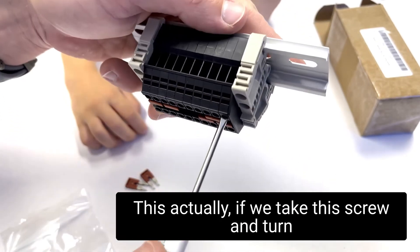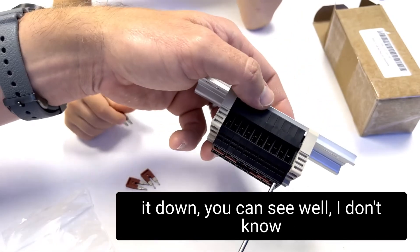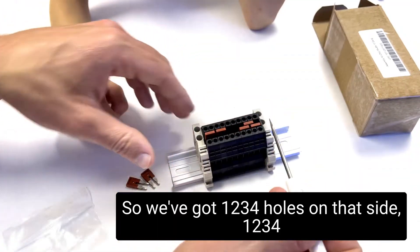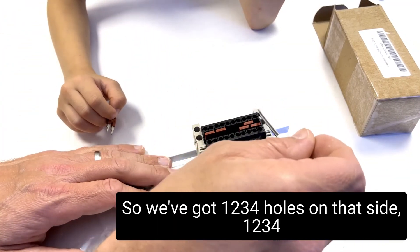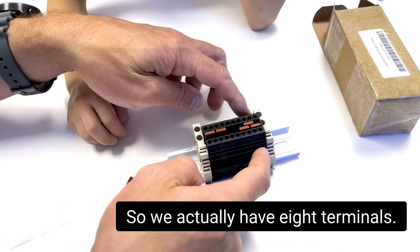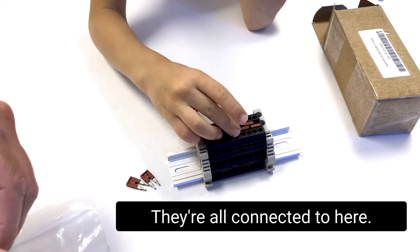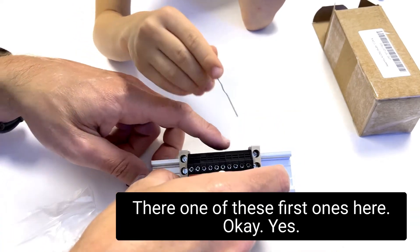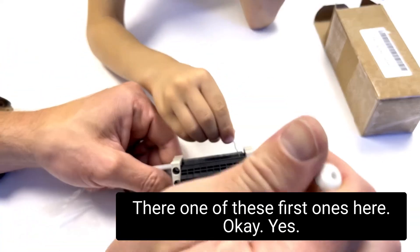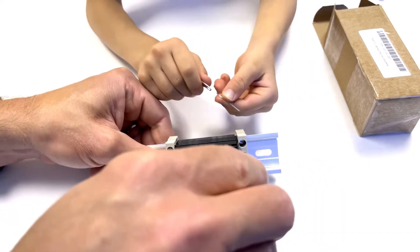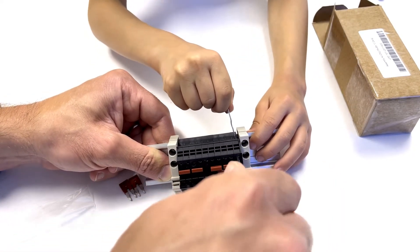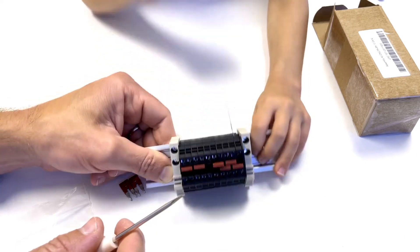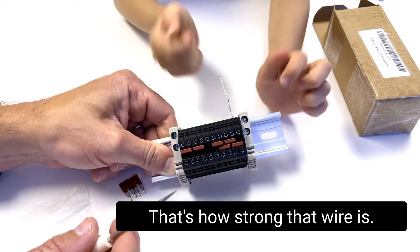This, actually, if we take this screw and turn it down, you can see, well, I don't know if you can see that, but that is closing, and that would hold the wire. So we've got one, two, three, four holes on that side, one, two, three, four on that side that are all jumped together. So we actually have eight terminals. They're all connected together. Oh, okay. Here, we want to put this in the wire hole there. One of these first ones here. This one? Yep. And now I'm going to turn the screw down. Yep. It's turning. All right, try to pull it out. Ha-ha! Not going to be able to pull it out, right? Okay? That's how strong that wire is.